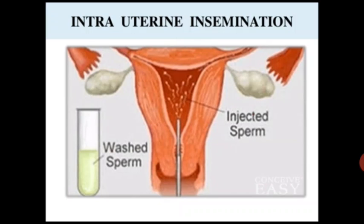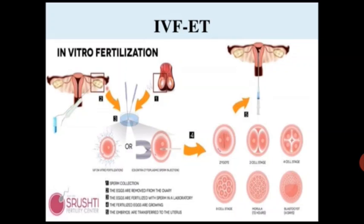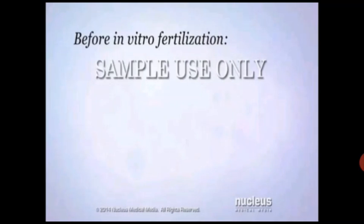In IVF-ET, female and male gametes are fertilized in the laboratory. The steps are: first, sperm collection; second, eggs are removed from the ovary; third, eggs are fertilized with sperm in the laboratory; fourth, the fertilized egg grows to morula and blastocyst stage; after that, the embryo is transferred to the uterus.